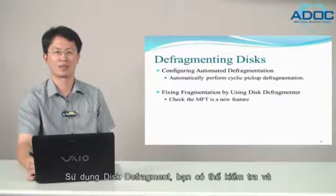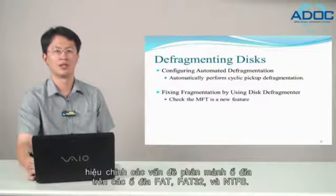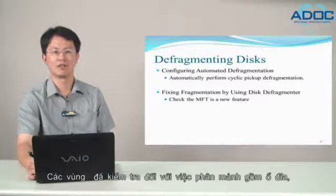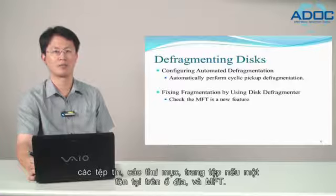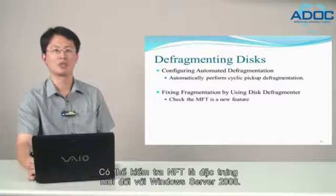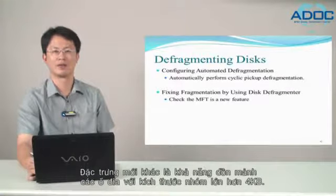Using Disk Defragmenter, you can check for and correct volume fragmentation problems on FAT, FAT32, and NTFS volumes. The areas checked for fragmentation include the volumes, files, folders, the page file if one exists on the volume, and the MFT. Being able to check the MFT is a new feature for Windows Server 2008. Another new feature is the ability to defragment volumes with a cluster size greater than 4KB.